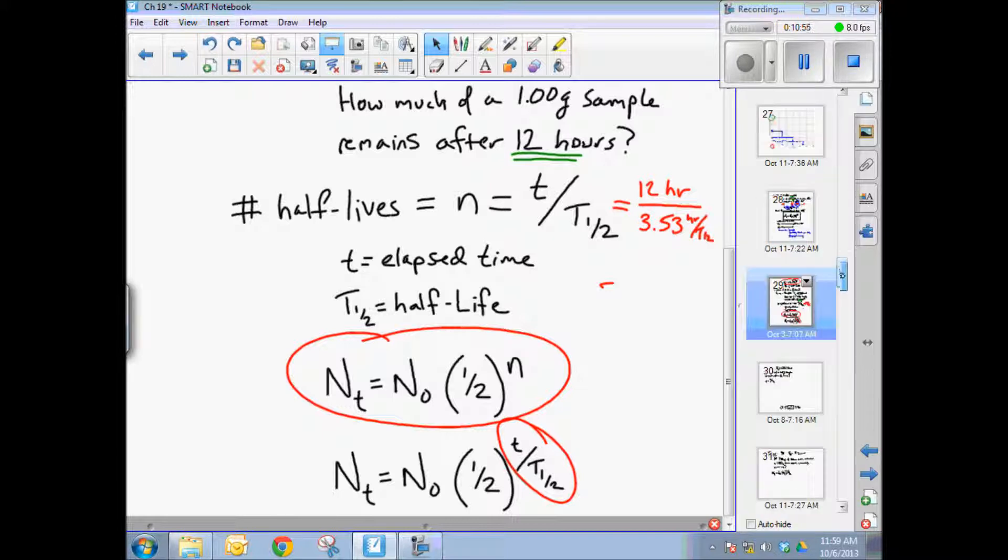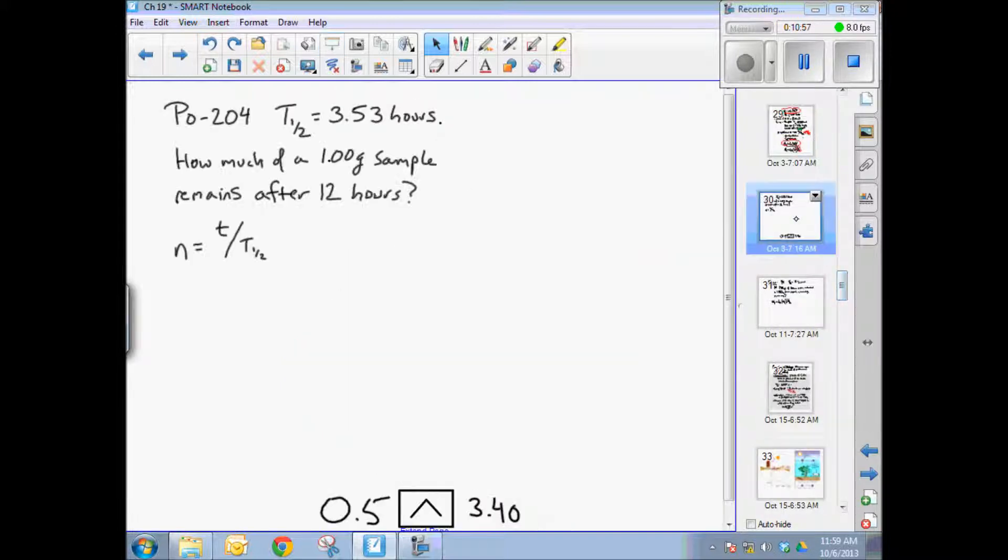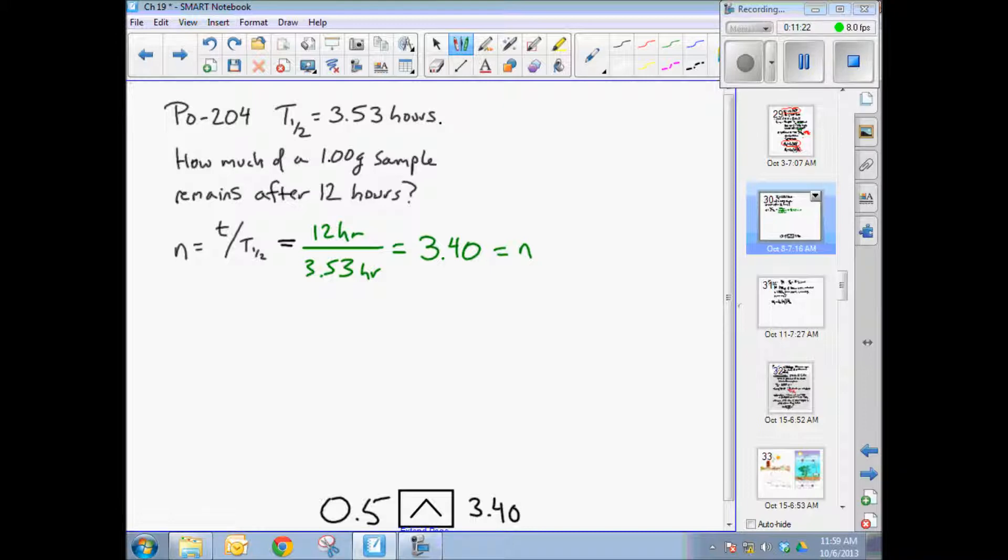So let's actually solve this last problem right here. We figured this out. Time was 12 hours and the half life was 3.53 hours. And that means we've gone through 3.40 half lives. That's the number. That's n, the number of half lives. And now this is a pretty simple problem. N sub t, the amount remaining at time t is equal to the original amount, which in this case is one gram times one half to the 3.40 number of half lives.